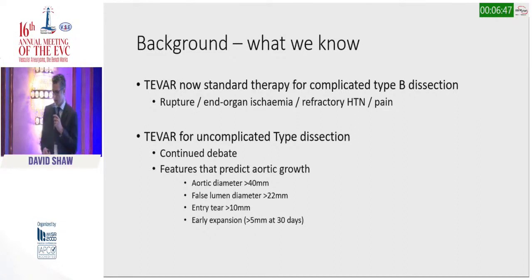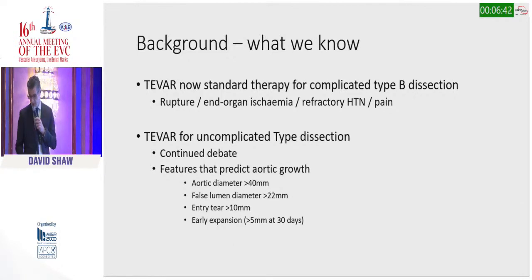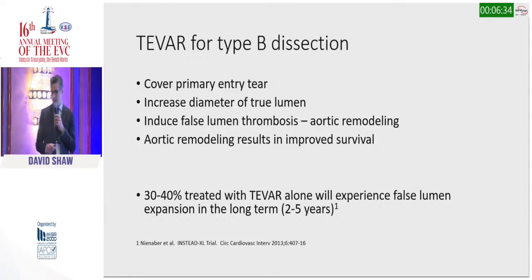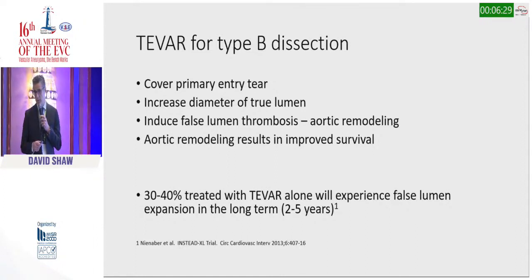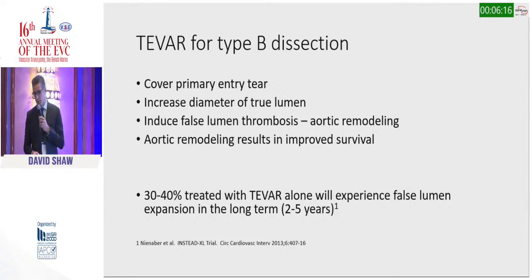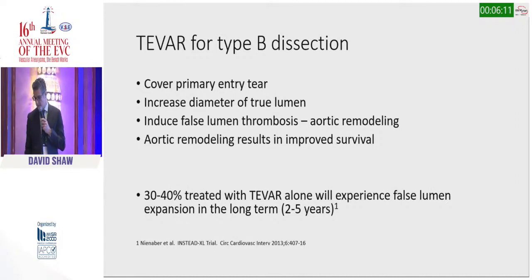TEVAR has now become the standard therapy for Type B dissection, but for uncomplicated dissection the debate continues and we are looking for features that might predict poor outcomes in the long term. The role of TEVAR is to cover the primary entry tear and increase the true lumen diameter, but it also promotes false lumen thrombosis and aortic remodeling, which can lead to improved long-term survival. One of the problems of TEVAR alone is that about 30 to 40 percent of people will have false lumen expansion over the next two to five years.